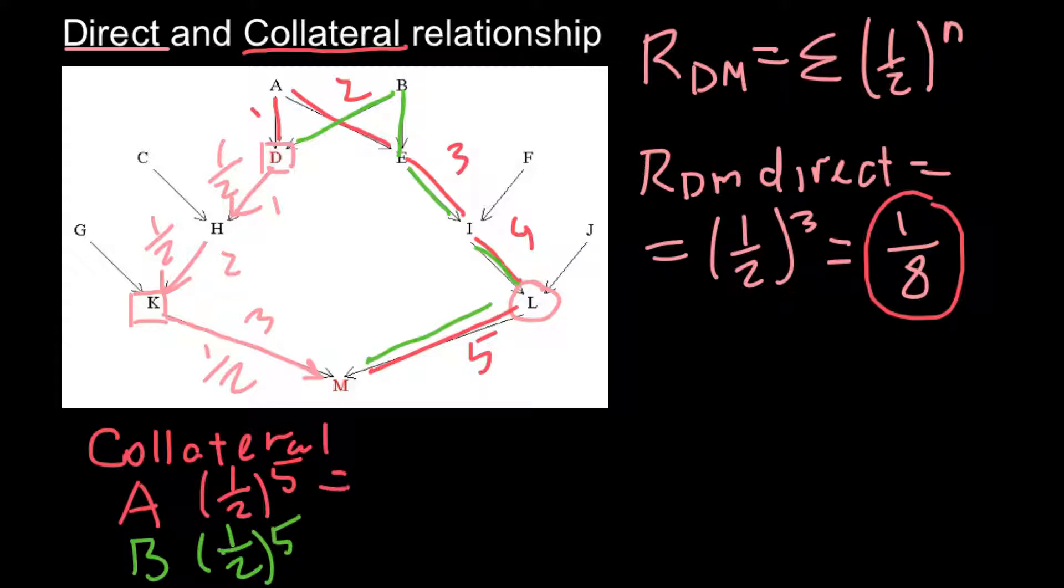So here we are going to get one over 32. And here we also going to get one over 32. And now we have to combine all this direct relationship and collateral relationship. As you see, sigma in our formula stands for the addition of all possible direct and collateral relationship.